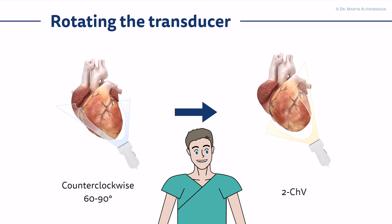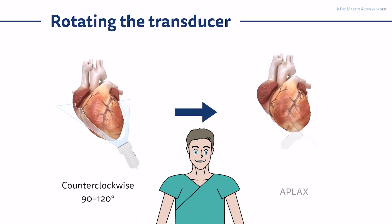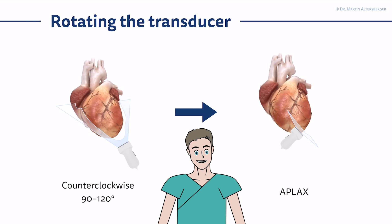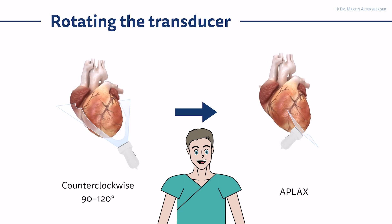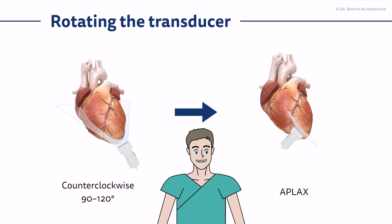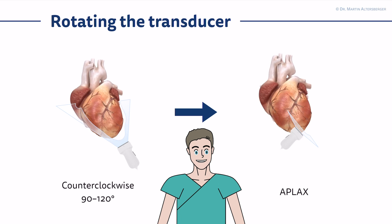If you continue more, 90 to 120 degrees, you find the apical long axis view. It is called apical long axis because it visualizes the same structures you have seen with the parasternal long axis view. If you want to see the parasternal views, there is an entire video designated for only the parasternal long axis view.